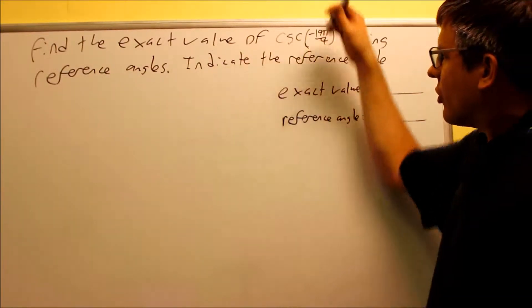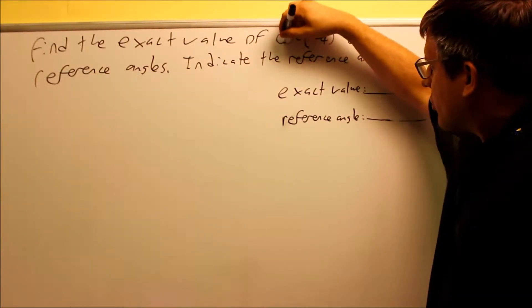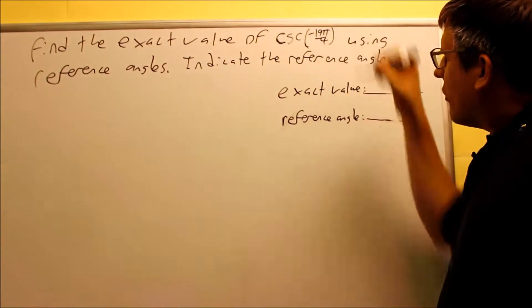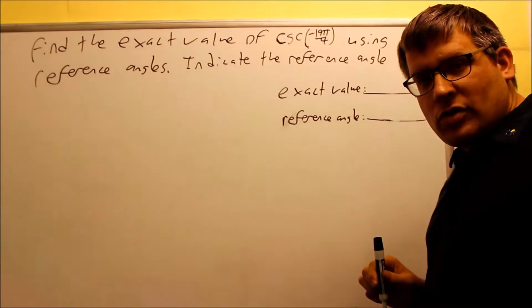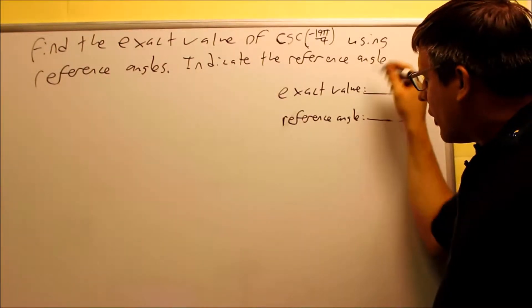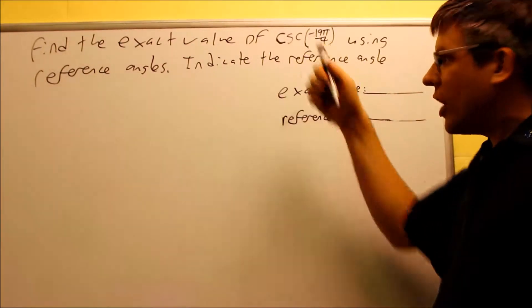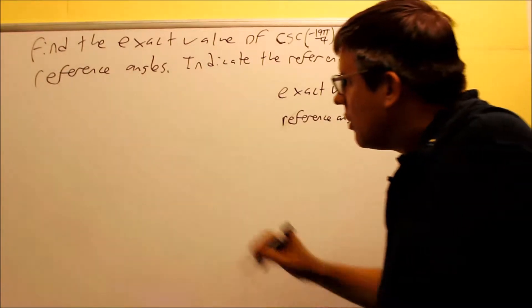Okay, another one: exact value of cosecant. So cosecant negative 19π over 4, another angle that has a negative inside. So in order to find, before I find these,